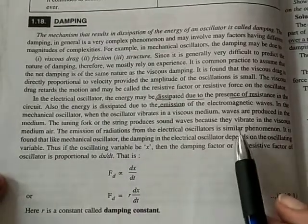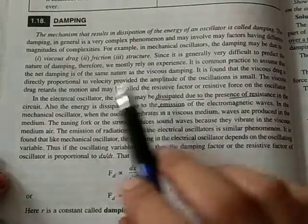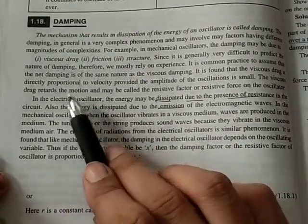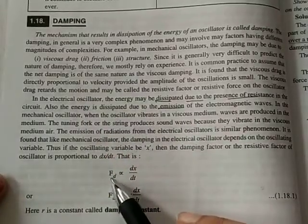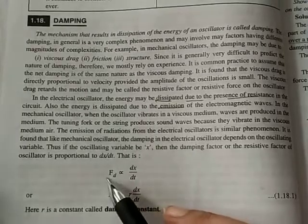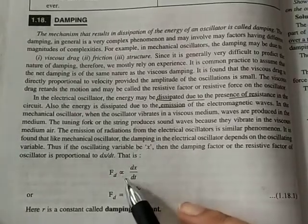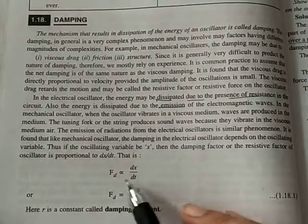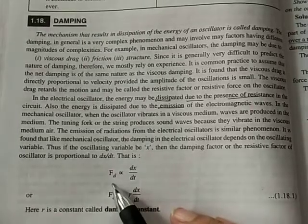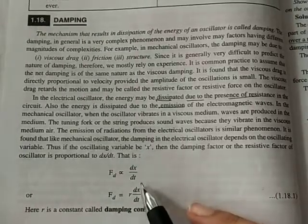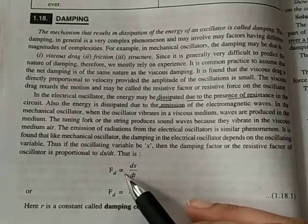If the viscous drag retards the motion and is proportional to velocity, then the damping factor, or we can say resistive force or the damping force, must be proportional to the velocity. The velocity term is dx by dt. So the Fd, the force, should be proportional to dx by dt. When we are removing the proportionality sign, we are taking the constant.